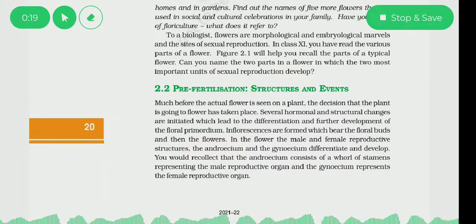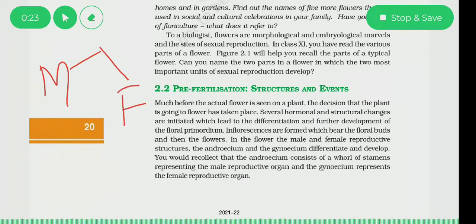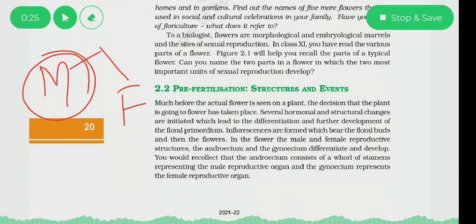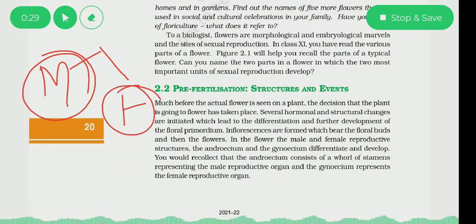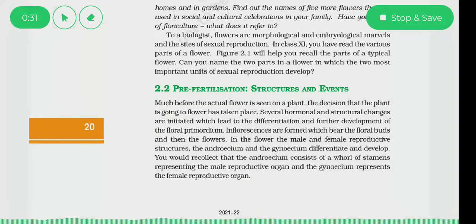As we know, a flowering plant has two parts: male parts and female parts. First we will discuss the male structures, male reproductive structures, and then the female ones. So let's begin with the male part.